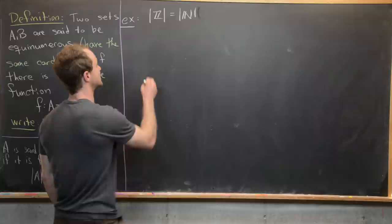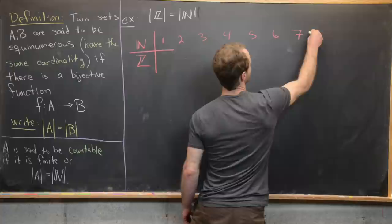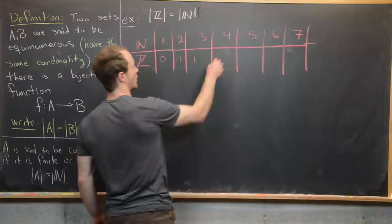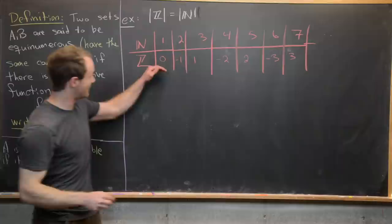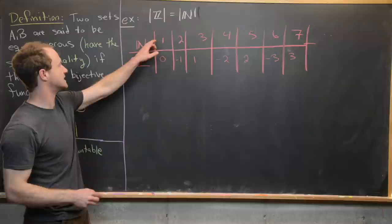Let's put the natural numbers in one row and the integers in another row. So we'll start with 1, 2, 3, 4, 5, 6, 7, and so on — those will be our natural numbers. Now we're going to list the integers right below: 0, then −1, then 1, then −2, then 2, −3, then 3, and so on. So we'll have a list of all the integers on the second row, setting up a bijective correspondence between the natural numbers and the integers.